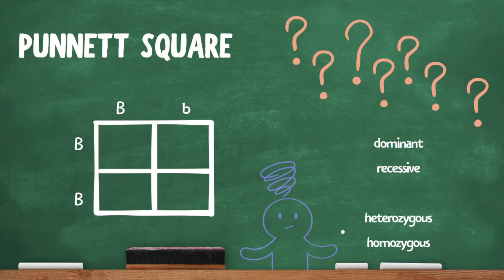You'll also need to know these words. A dominant trait is represented by a capital letter and it's always expressed if it's present, even if there's only one capital letter in the pair. The recessive trait, shown with a lowercase letter, will only be expressed if both alleles are recessive. Heterozygous means the two alleles for a trait are different, and homozygous means they're the same. This parent, for example, is homozygous dominant.